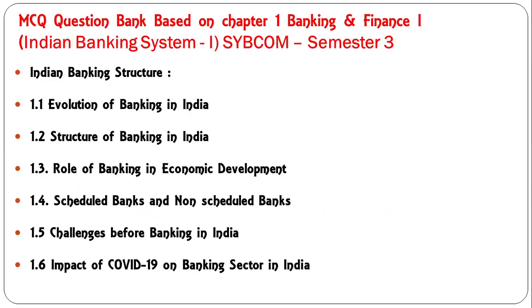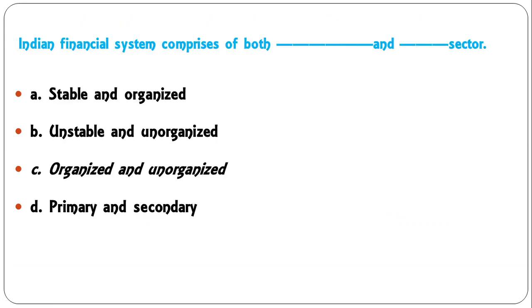Question: Indian financial system comprises of both dash dash sector. Options: stable or unstable, organized or unorganized, primary and secondary sector. The answer is: Indian financial system comprises of both organized and unorganized sector — both are present in the Indian financial system.